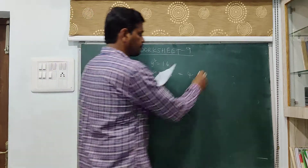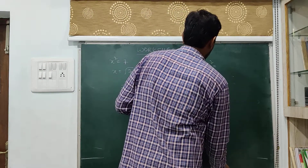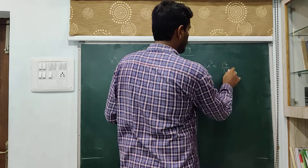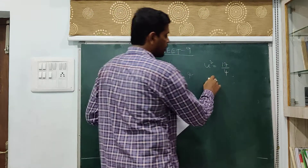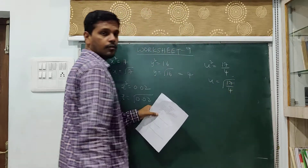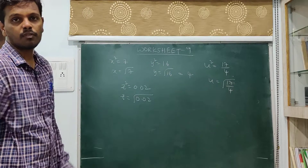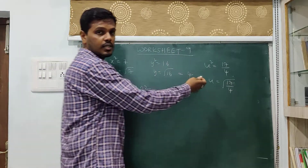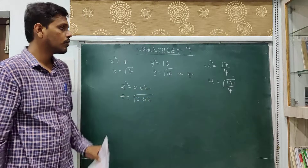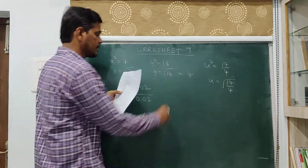Next: u squared is equal to 17 by 4. u is equal to square root of 17 by 4. Though 4 is a perfect square, 17 is not a perfect square. If both of them were perfect squares, then it would have been a rational number. Since both of them are not perfect squares, u is not rational — it is irrational.